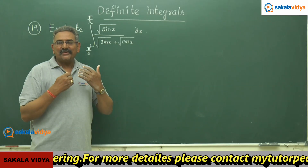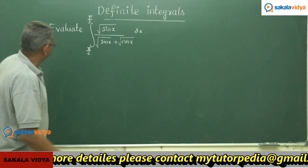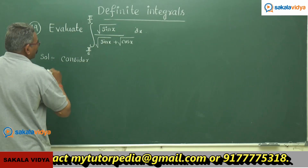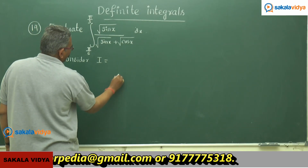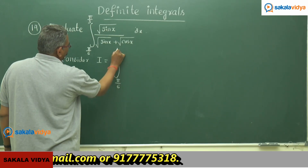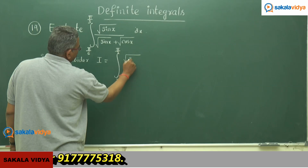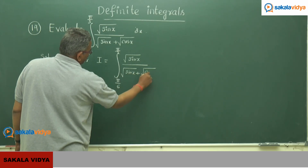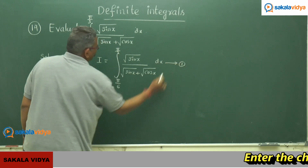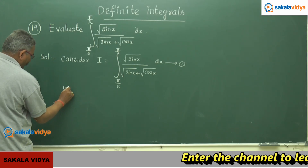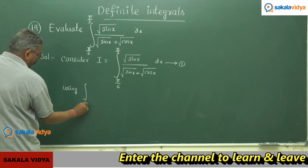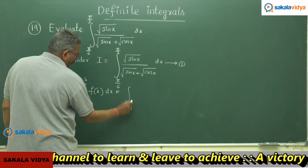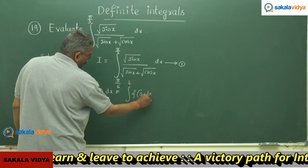Let us check whether we get π/12. Consider I = integral from π/6 to π/3 of √sinx / (√sinx + √cosx) dx, call this equation 1. Now using the property: integral from a to b of f(x) dx equals integral from a to b of f(a+b−x) dx.